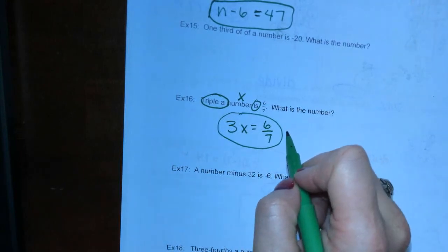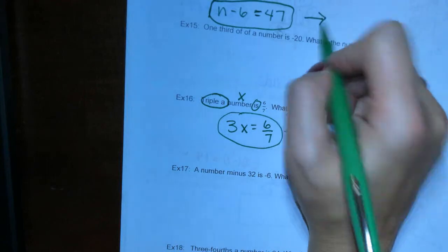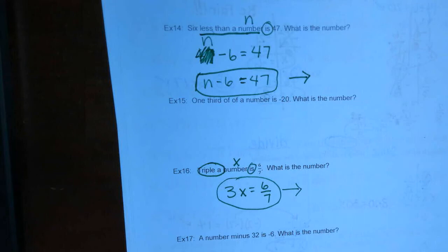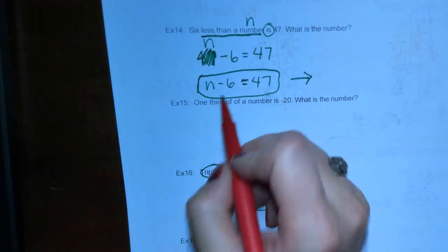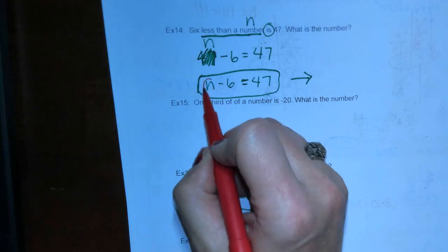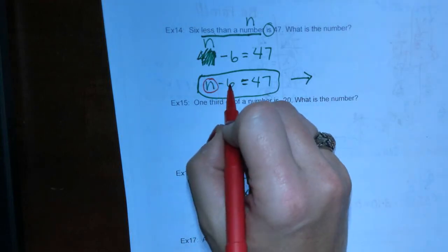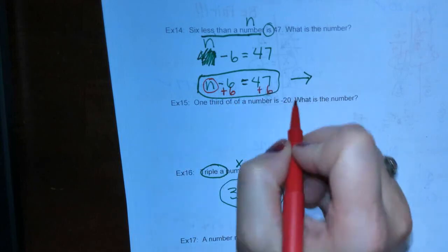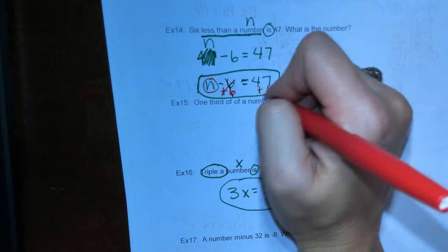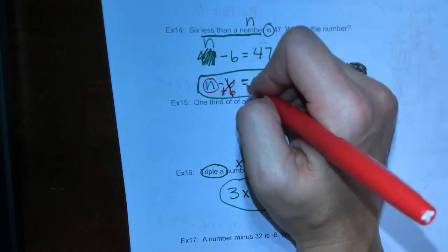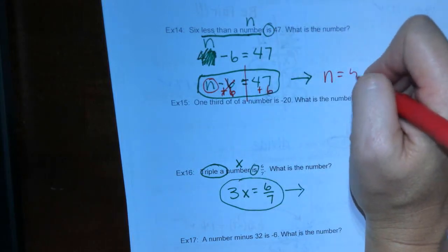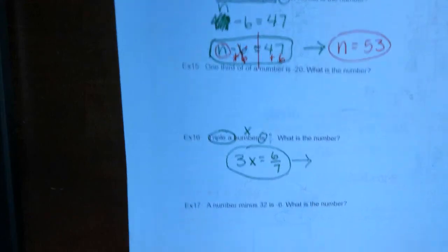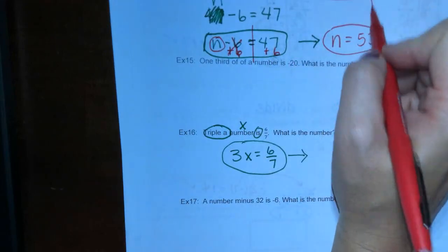I want you to take these two further and solve for the number — that means solve for the variable. For number 14, 6 is being subtracted from n, so we're going to add 6 to both sides. That gives us n equals 47 plus 6, which is 53. That's the ultimate answer — the number is 53.